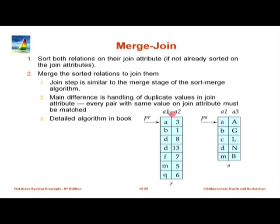Here is relation r sorted on attribute a1: a, b, d, d, f, m, q. Similarly, relation s is sorted on the join attribute a1. The merge join simply keeps a pointer to the first record of each relation. When they match — for example, both are 'a' — output that pair immediately. For a natural join, the two copies of a1 are replaced by one. Then advance the pointer for the smaller value, and continue matching. If the next record in r is 'b' and s still points to 'a', advance s to the next 'b', which is a match and is output.